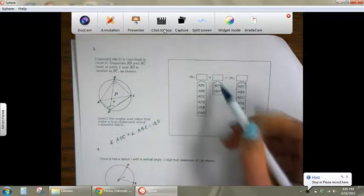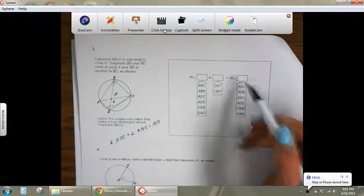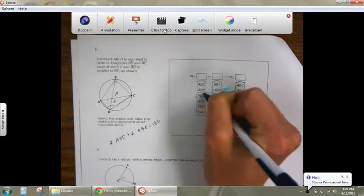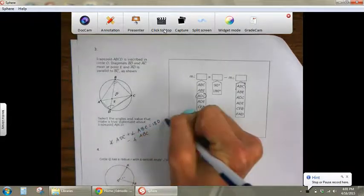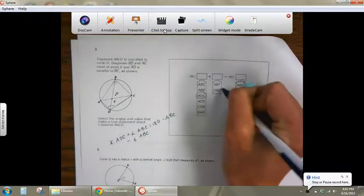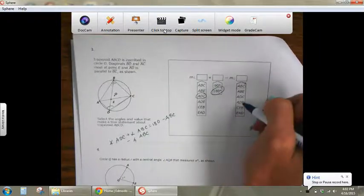So you can rearrange that equation using algebra and say that A, D, C is equal to 180 minus A, D, C.